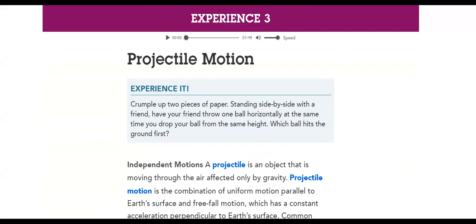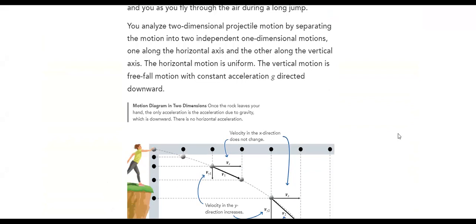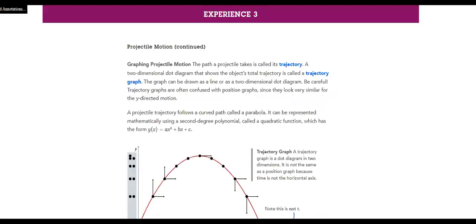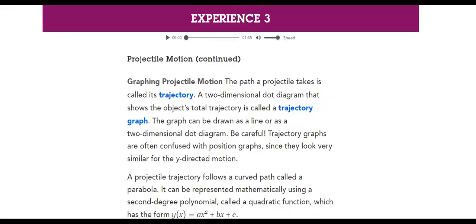A projectile is an object that is moving through the air affected only by gravity. We will have many terminology to define. Here is an example of a lady who's standing at the top of a cliff and throwing a ball, and then we are resolving the vector components in each time it's taking.